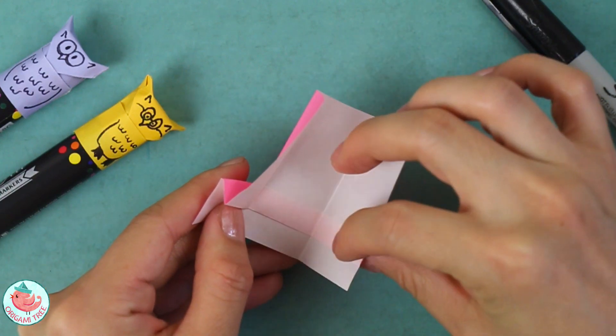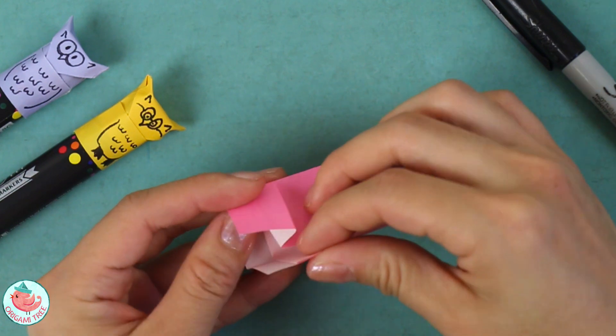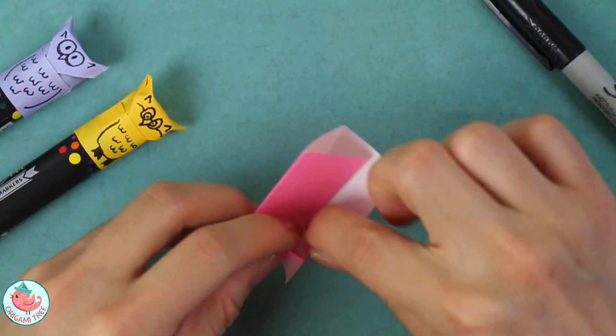Now take this slot over here, this is a slot and this is a tab, and you just want to fold it over so that it slides right in. Just open it up from the side like that and you'll see that it slides in.